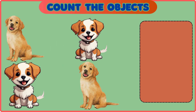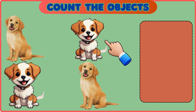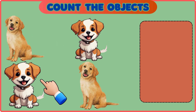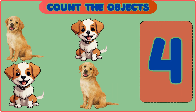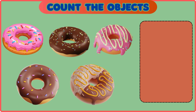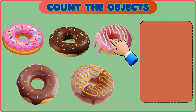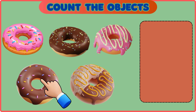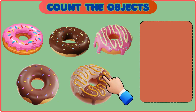Count number of dogs: 1, 2, 3, 4. 4 dogs. Count number of donuts: 1, 2, 3, 4, 5.